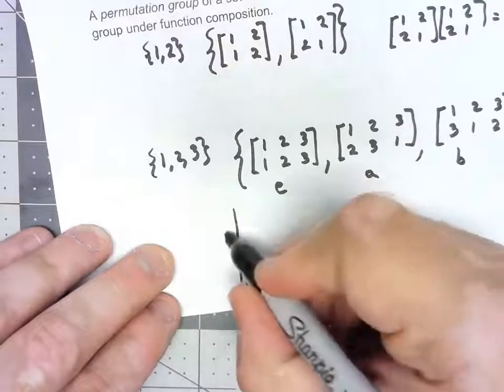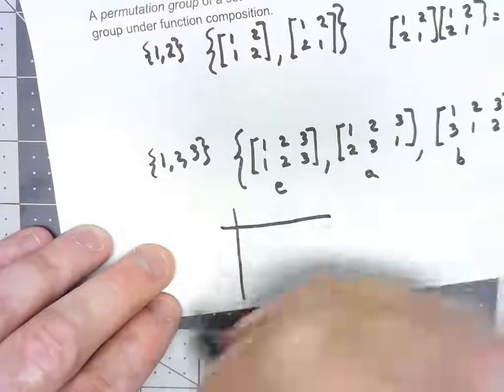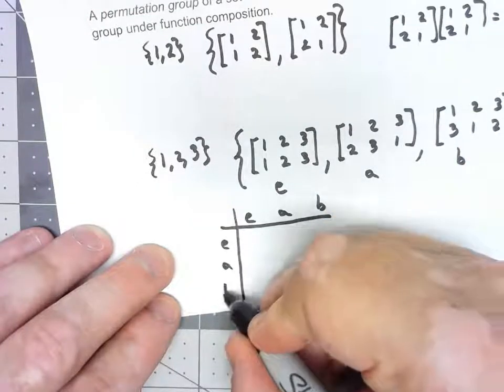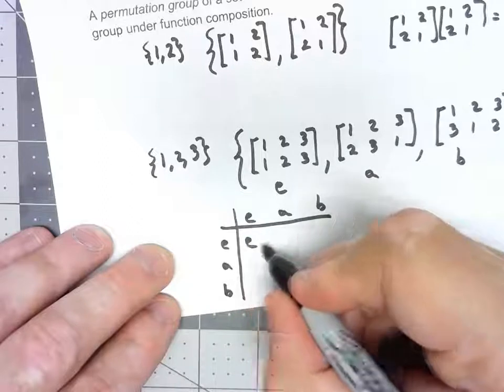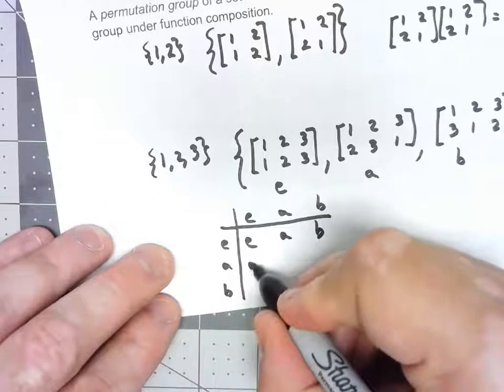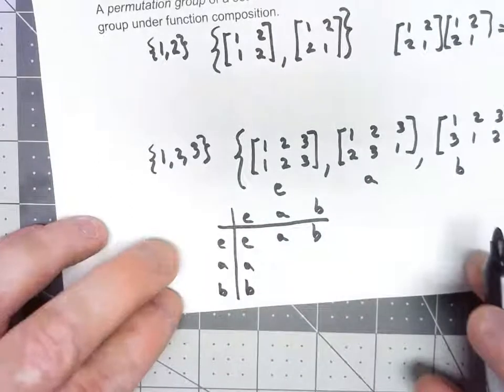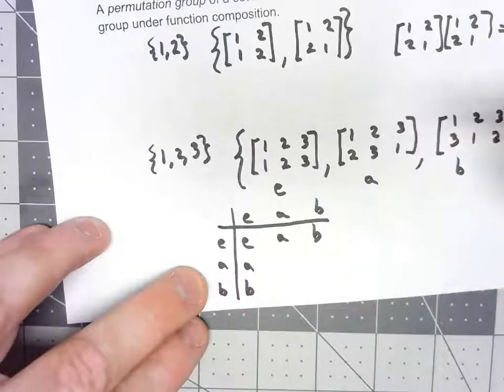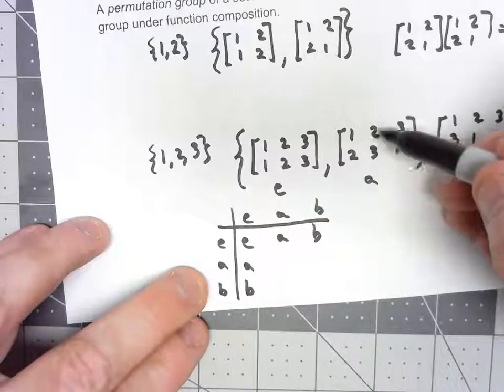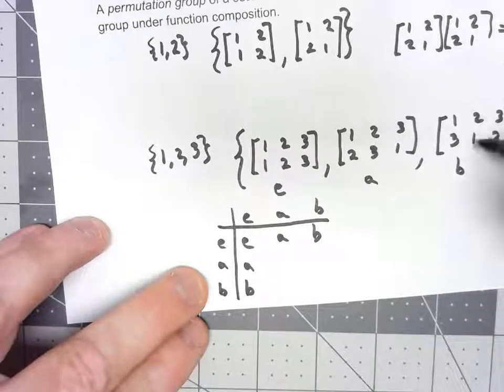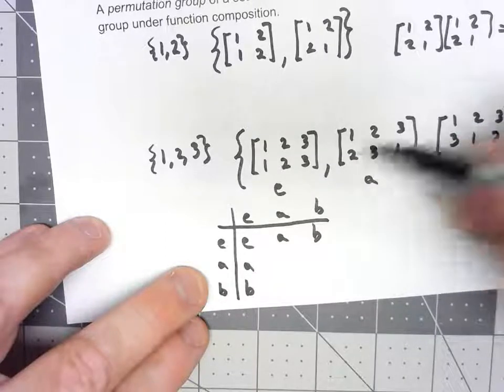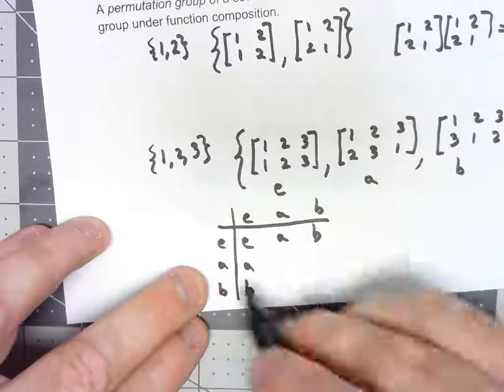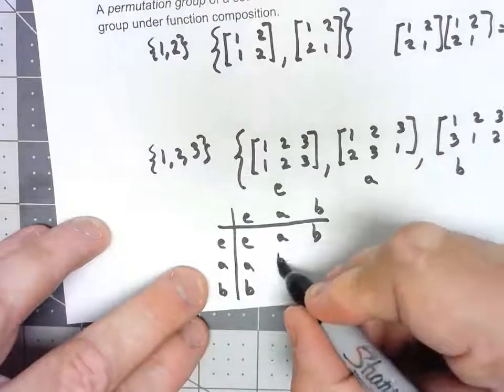Certainly, multiplying by the identity, we know what we're going to get there. So what if I do A times A? 1 goes to 2, 2 goes to 3, so 1 goes to 3, 2 goes to 3, 3 goes to 1, so 2 goes to 1. 3 goes to 1, 1 goes to 2, so 3 goes to 2. So A times A has to be B.